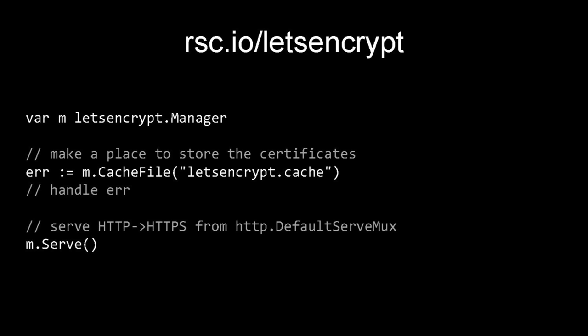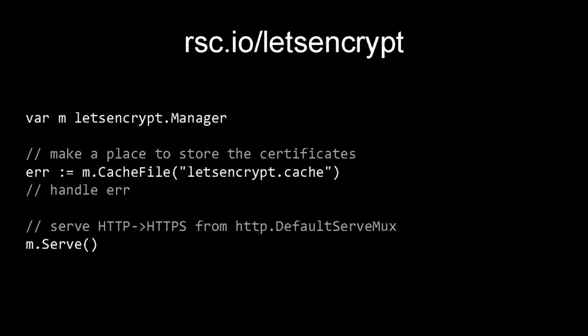This first package is by Russ Cox — it's the Let's Encrypt package. ACME is CA agnostic, but Let's Encrypt is currently the only certificate authority that implements ACME, and you can get certificates for free from them. All you do is create a manager and configure it with a cache file. Certificates are valid for 90 days, so you don't need to get a new one every time you run your Go program — doing that will run you into rate limits. Then instead of calling http.Serve, you call m.Serve, and it will redirect plain text traffic to encrypted traffic using the default serve mux.